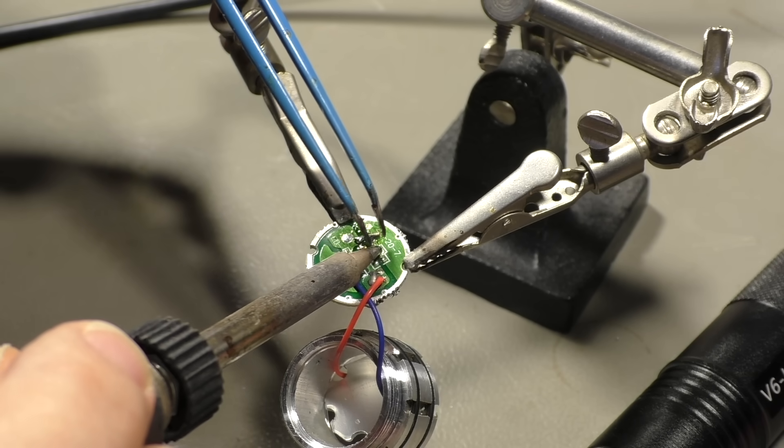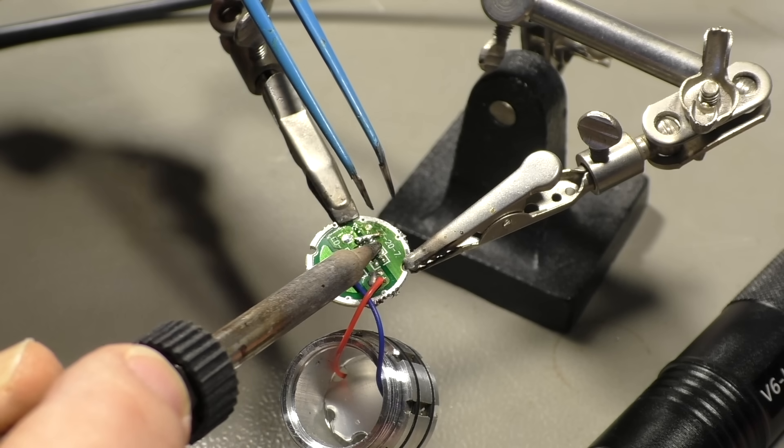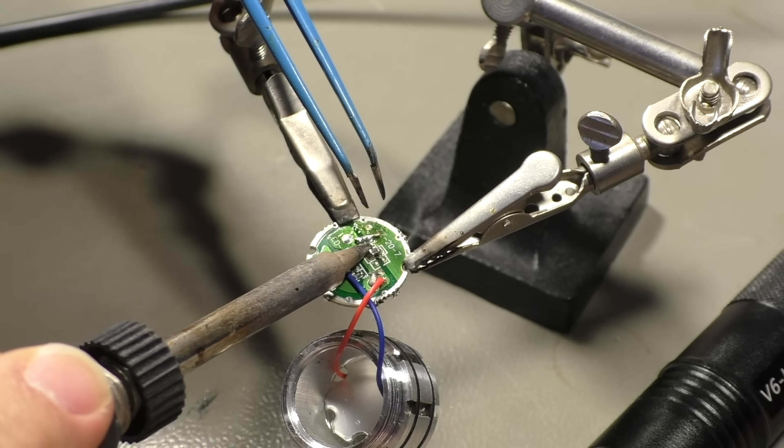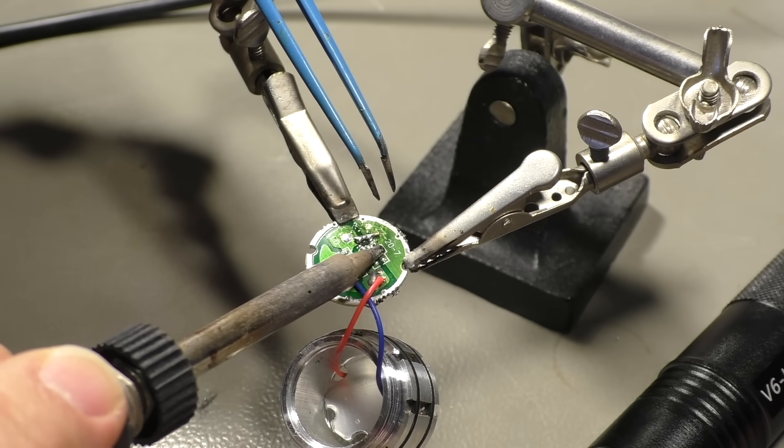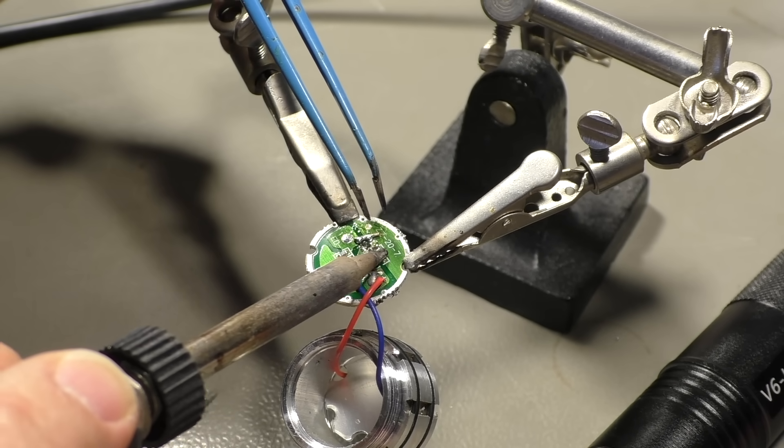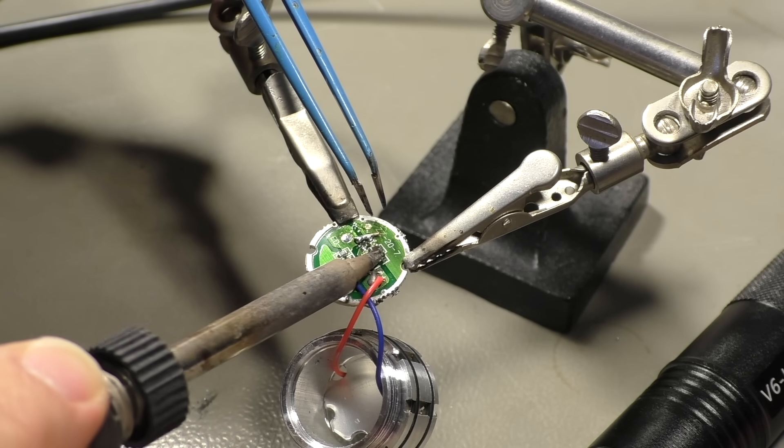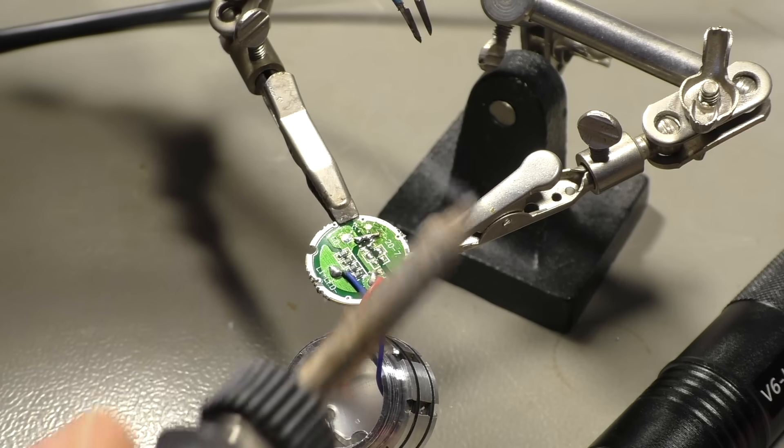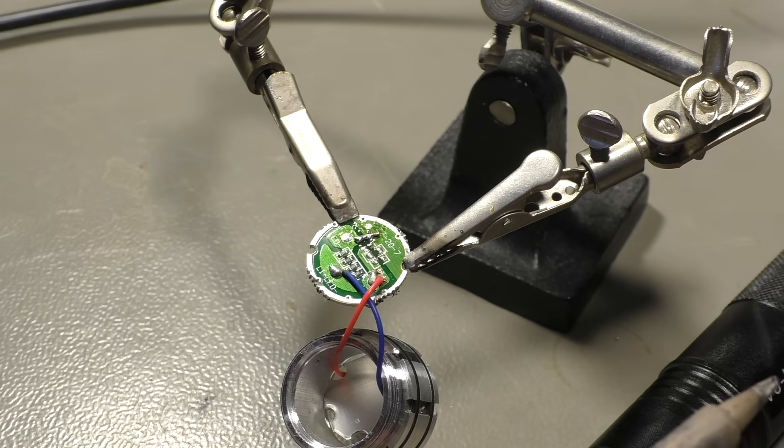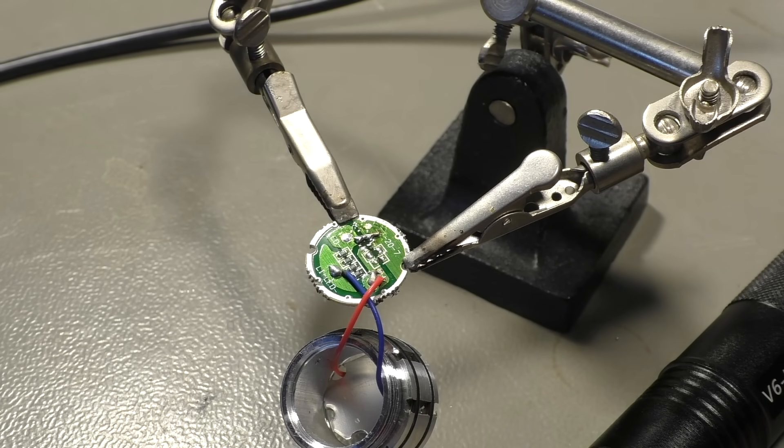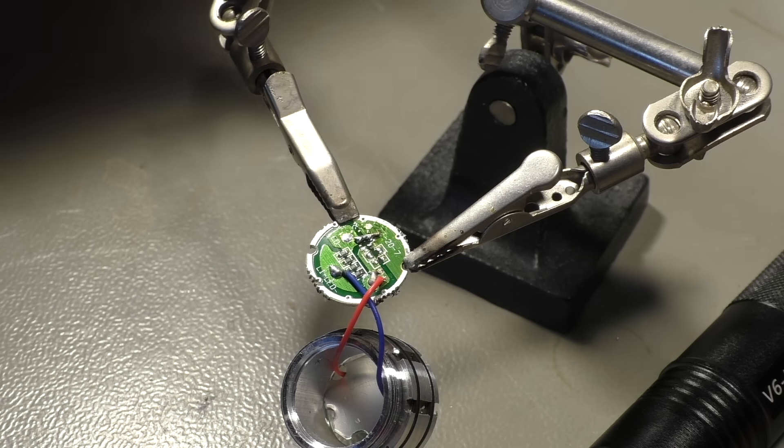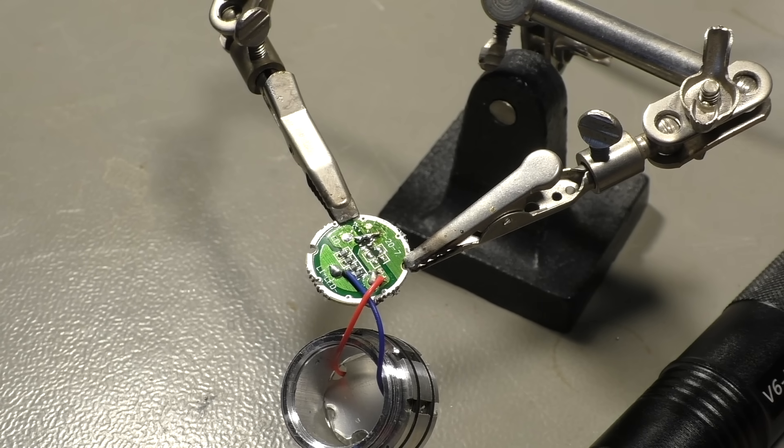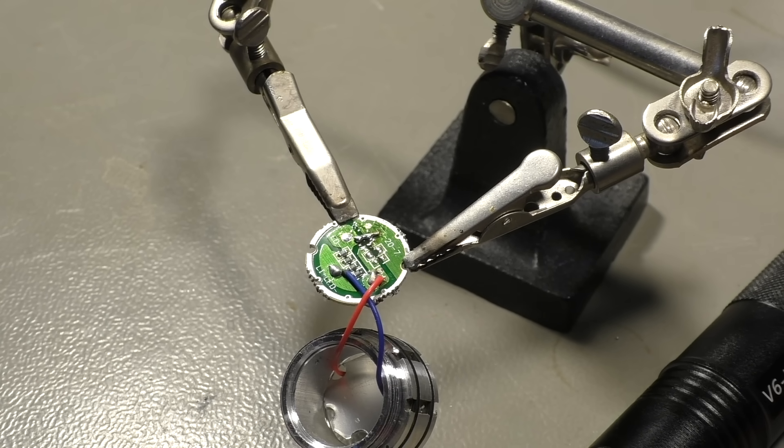I just decided to also remove the capacitor because it has no more function and it's between the plus and the minus of the battery. So if that capacitor shorts out for some reason my flashlight wouldn't work anymore. Okay so all the components that are not needed anymore are gone. Let's reassemble the whole thing and let's see if it still works.